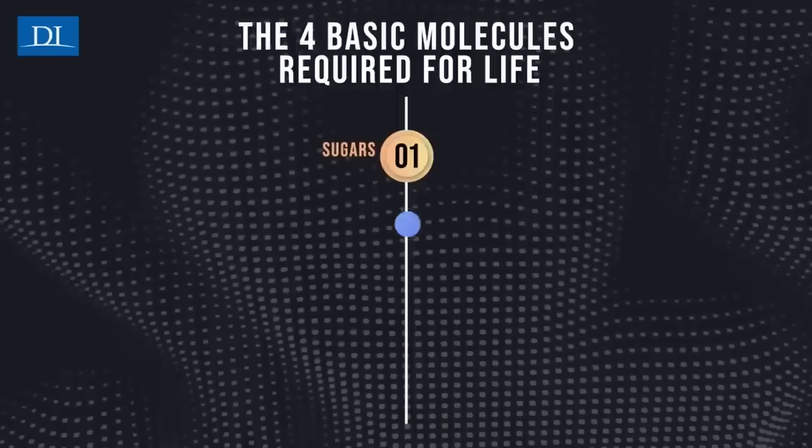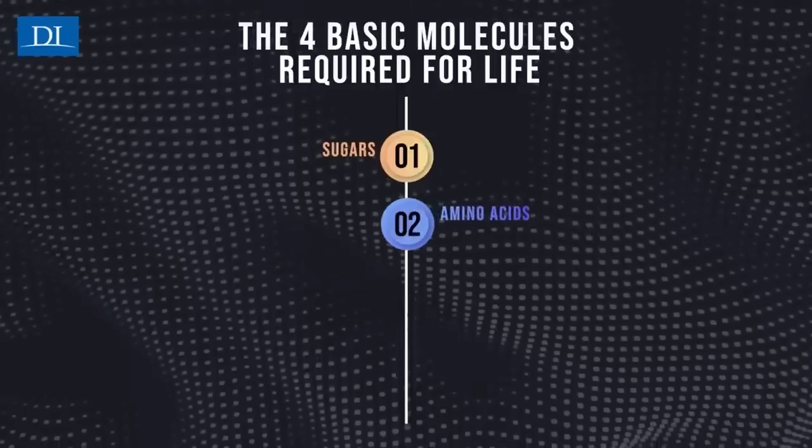A good place to start is to review those four classes of molecules critical to making life as we know it. The four classes: one is sugars, which are called carbohydrates or saccharides — it's all the same thing. Sugars, carbohydrates, saccharides, all the same thing, and the polymers made from those. Another class is based on amino acids that polymerize to your proteins and your enzymes.